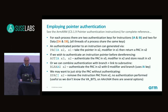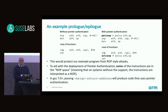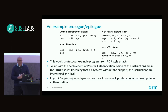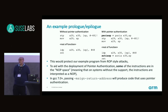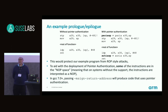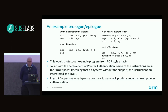So the basic operations are: create a signed pointer, authenticate one, and strip if necessary. Our prologue and epilogue can be changed - on the right-hand side we have extra instructions. Just before we store our X30 register, we create a signature using the stack pointer as a modifier. Then before we return from the function, we authenticate the pointer. If pointer authentication is enabled on the system, it will cause a translation fault if anybody modifies the data surreptitiously, and the program will fail with a very precise location of where it failed on the return.